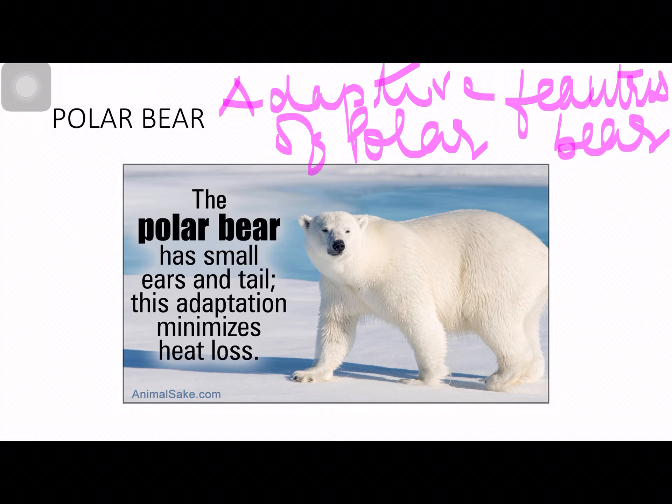The color of the polar bear's hair is actually brown, not white. But as light falls on the snow and reflects back, it appears white to us. This is called camouflage — the polar bear merges with the snowy background so predators cannot find it. The very first adaptive feature is that it has small ears and a small tail, to minimize heat loss, because it is very cold there and they require more body heat.